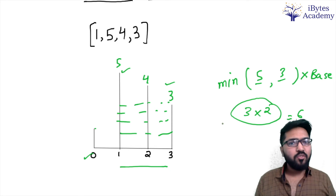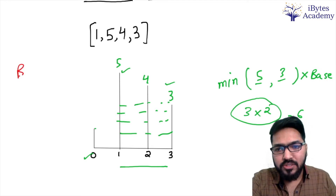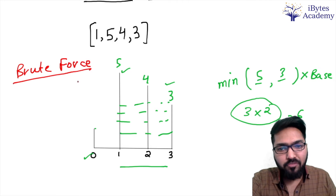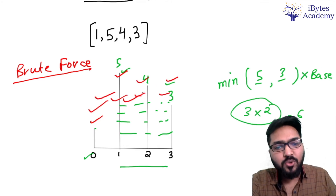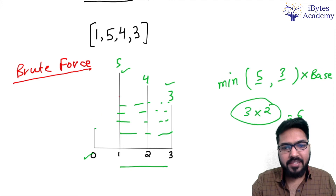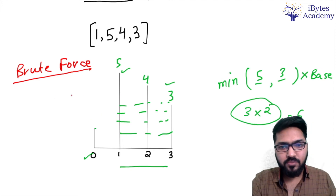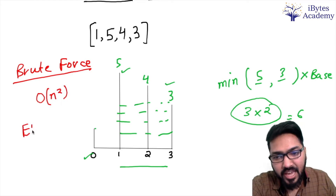So how are we going to solve this? I'd recommend you pause the video and think of a solution first. Now let's discuss. The brute force solution is to consider every pair of bars, and whichever pair gives you the maximum water is your answer. Obviously this is an O(n²) solution.